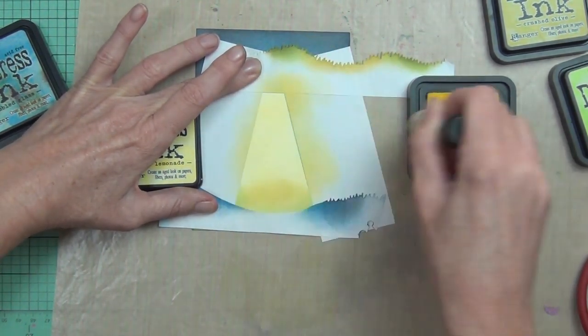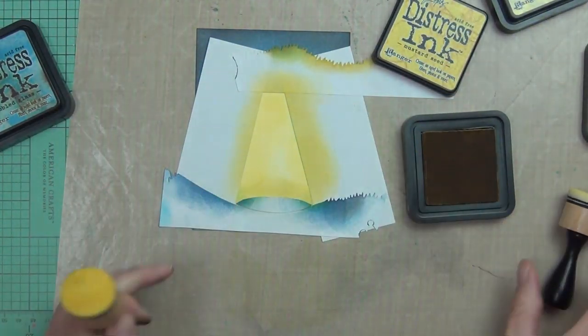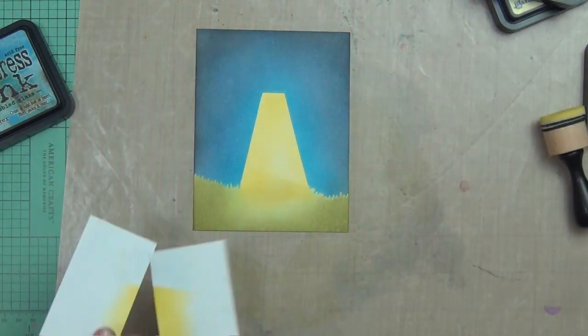The center for my light is just a nice bright yellow color. You could do this with distress oxide inks as well or any inks as a matter of fact.